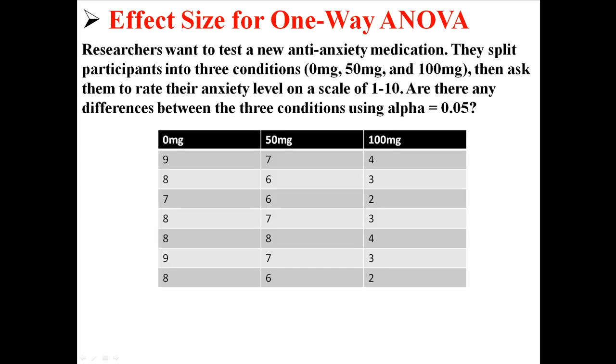I had this example in my last lecture for the one-way ANOVA. Researchers want to test a new anti-anxiety medication. They split participants into three conditions: 0, 50, and 100, and then asked them to rate their anxiety level.